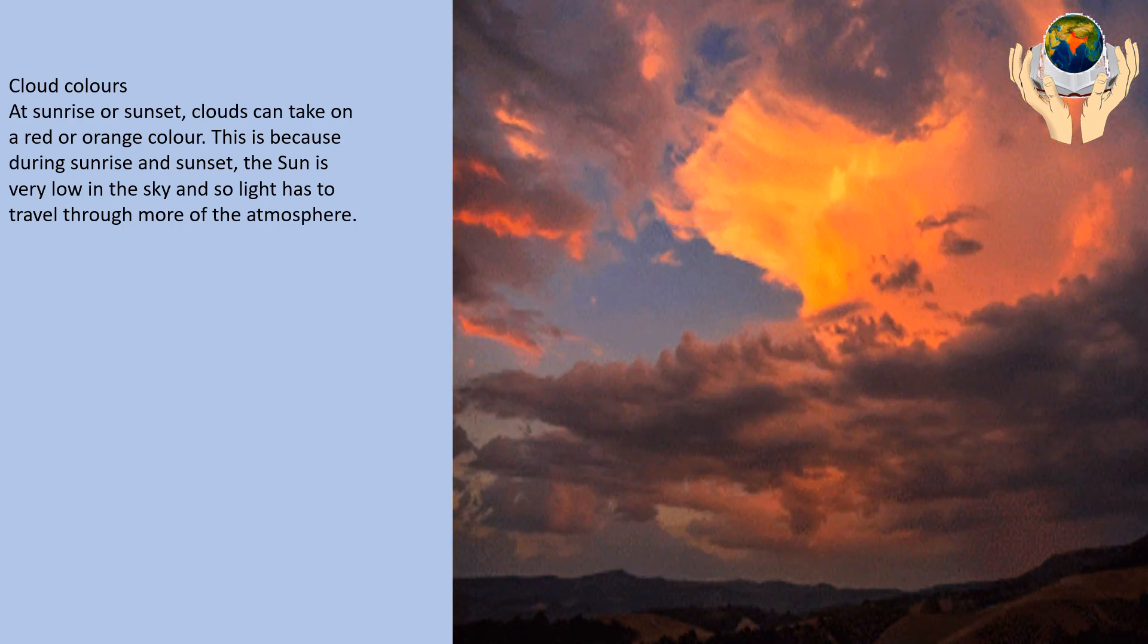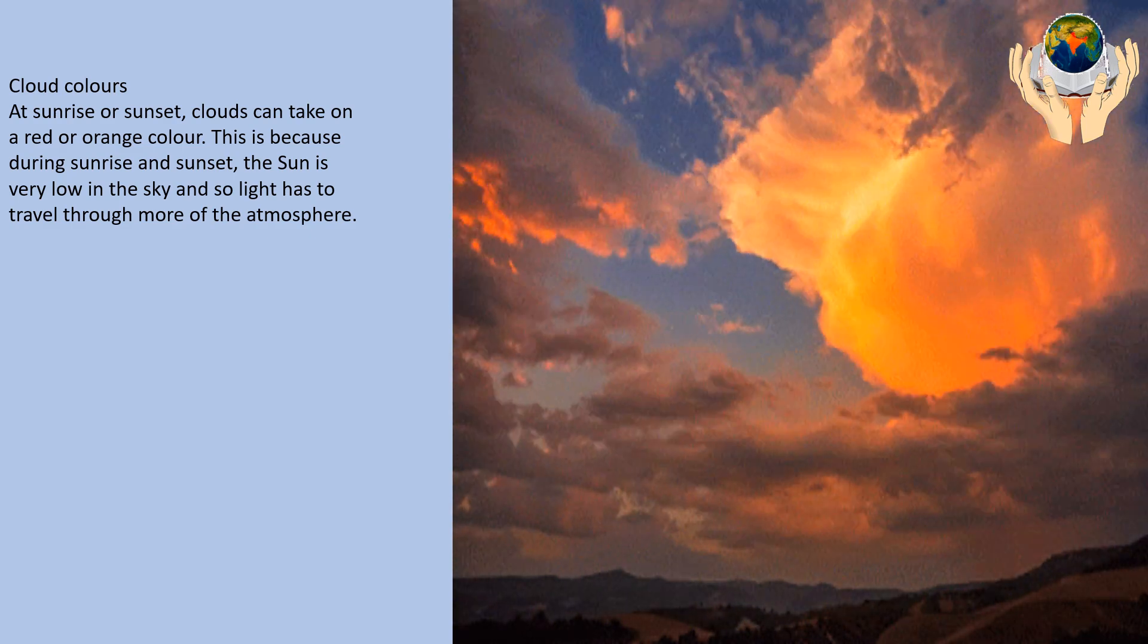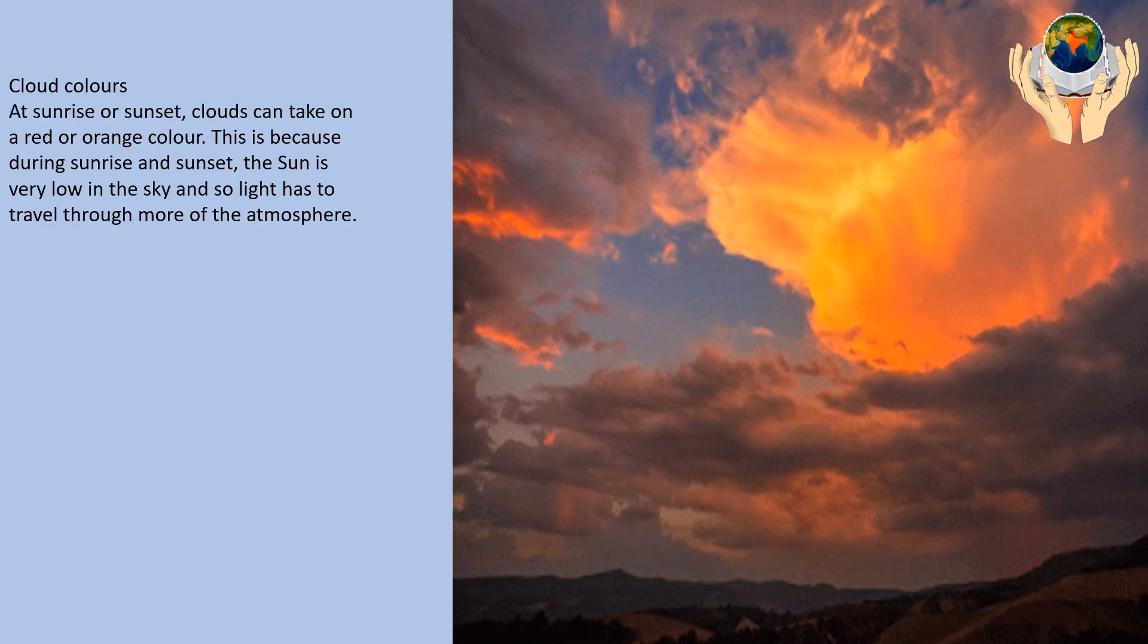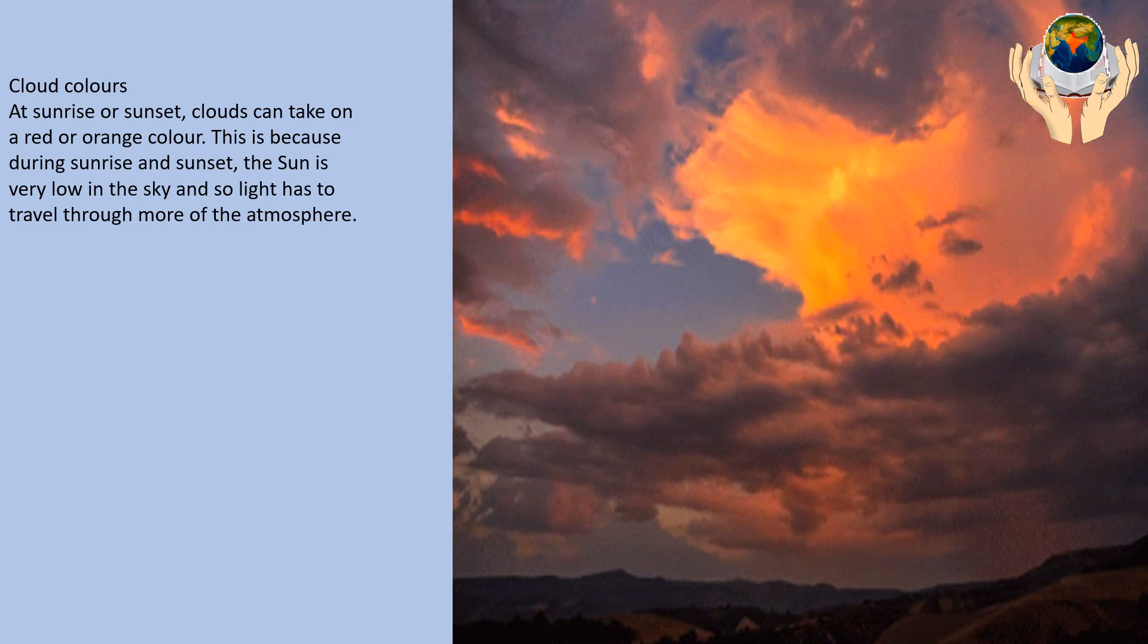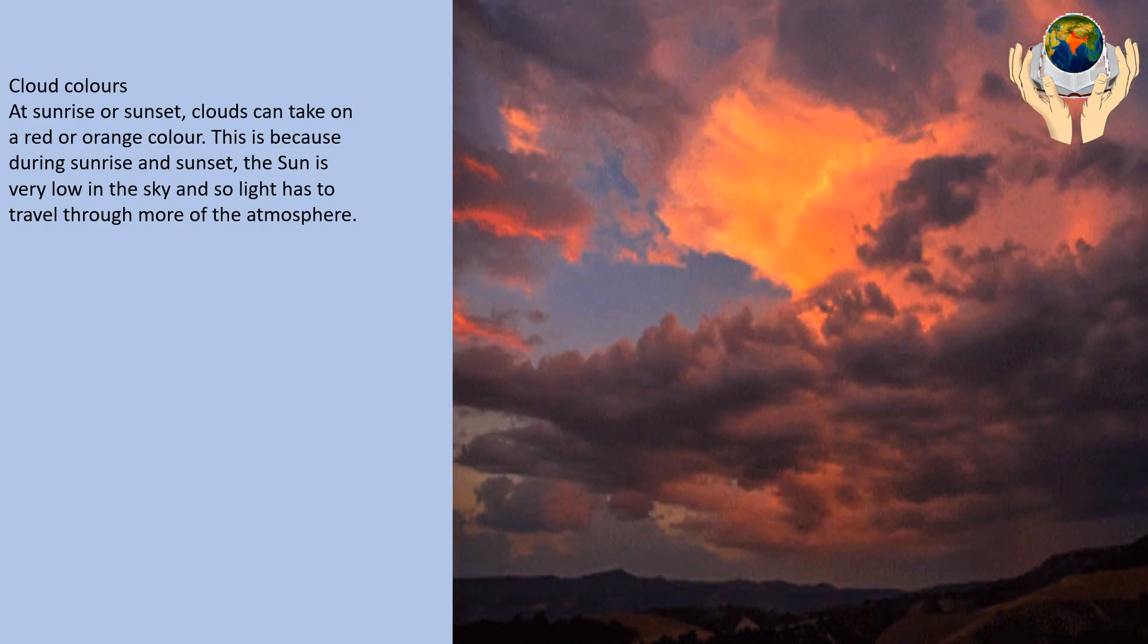Cloud colors at sunrise or sunset. Clouds can take on a red or orange color. This is because during sunrise and sunset, the sun is very low in the sky, and so light has to travel through more of the atmosphere.